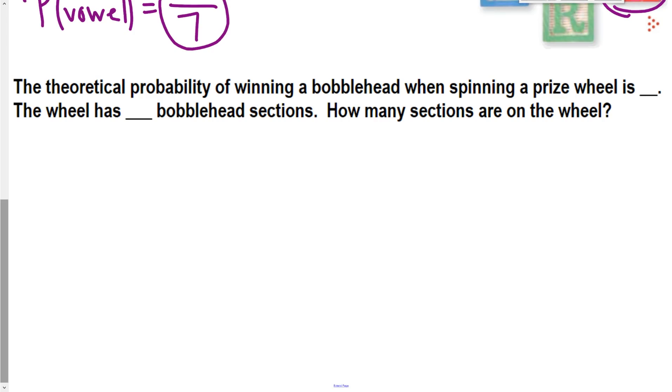The theoretical probability of winning a bobblehead when spinning the prize wheel is one-sixth. The wheel has three bobblehead sections. So how many sections are on the wheel in total? Well, so this one, I'm not actually finding the probability. I'm giving the probability, but I'm going to use that probability to find something else out.